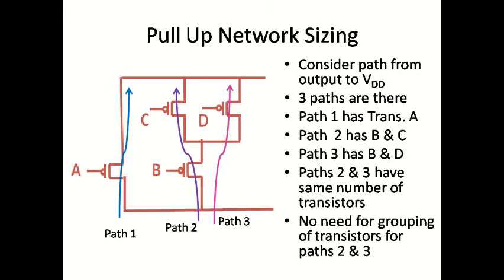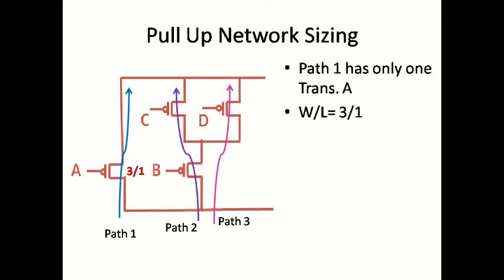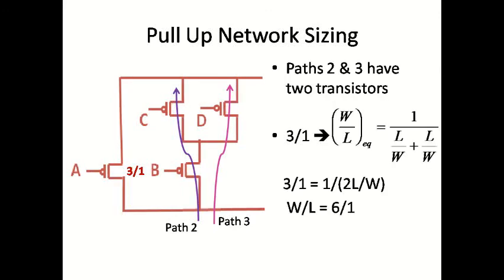Path 1 has only one transistor, so the equivalent W by L will be shared by that transistor alone. The equivalent W by L of 3 by 1 will be shared by transistor with input A alone, so the size of transistor with input A is 3 by 1. Paths 2 and 3 have two transistors in series, so the equivalent W by L equals 3 by 1 equal to 1 by (L/W + L/W), which equals 3 by 1 equal to 1 by 2L by W.